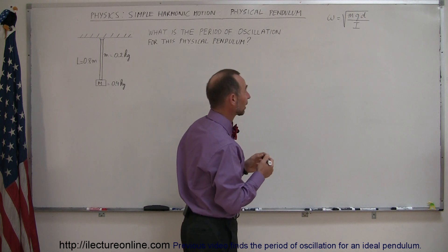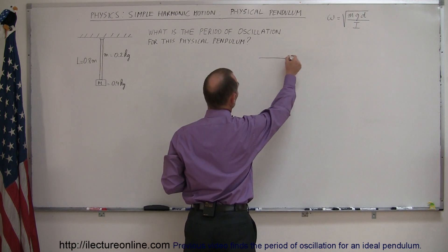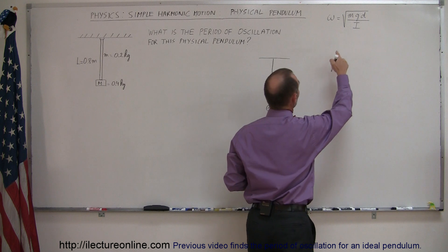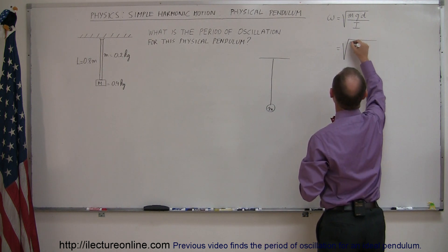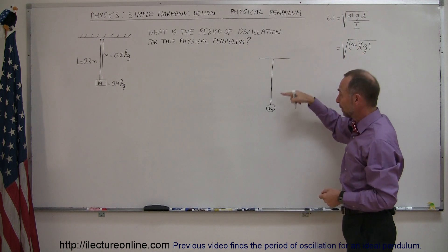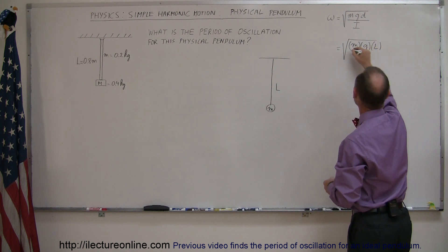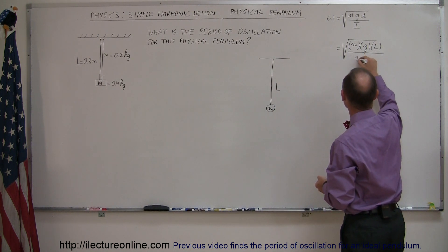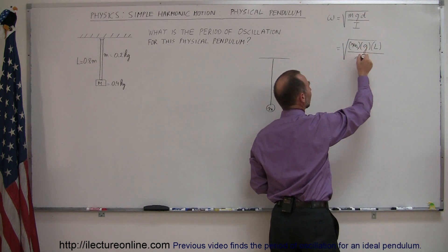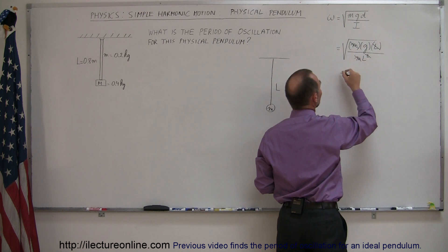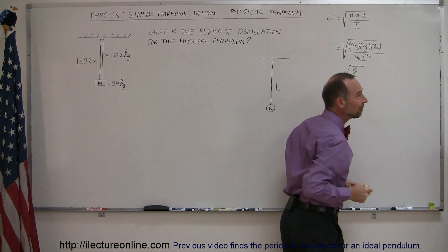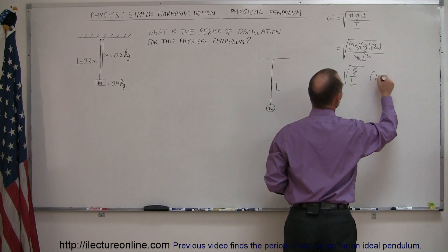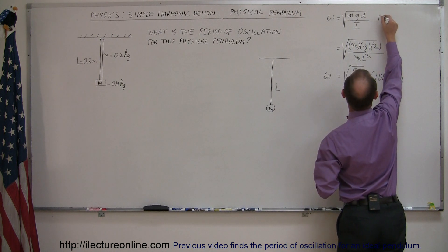To show where that equation comes from, let's consider an ideal pendulum with no mass on the string and all mass at the very bottom. We still have the mass and G. The distance to the center of mass would be the whole length L. Dividing by the moment of inertia of an ideal pendulum — since all mass is at the bottom, that's ML squared. The M cancels, the L cancels, and we get the square root of G over L, which is indeed the oscillatory frequency equation for an ideal pendulum.